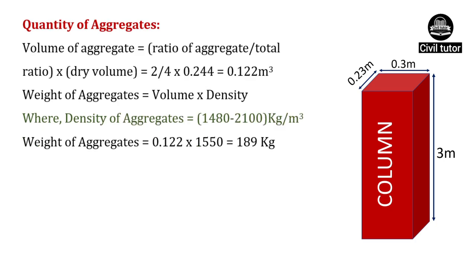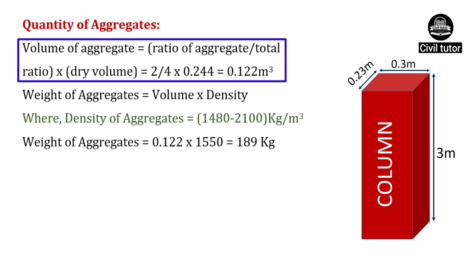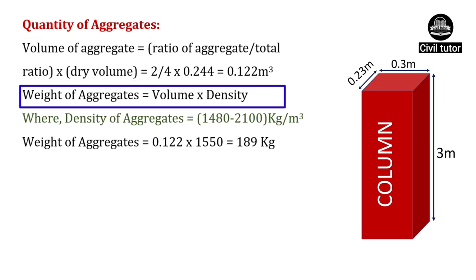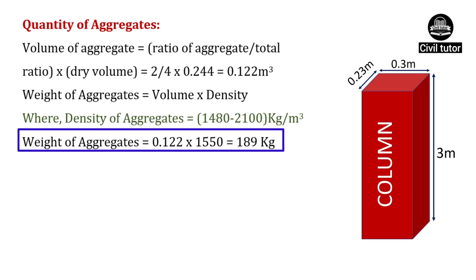Volume of aggregates equals ratio of aggregates upon total ratio into dry volume. Ratio of aggregates for M25 is 2, total ratio is 4, and dry volume is 0.244. Substituting, volume of aggregates equals 0.122 meter cube. The density of aggregates ranges from 1,480 to 2,100 kg per meter cube. Substituting, weight of aggregates equals 189 kg.